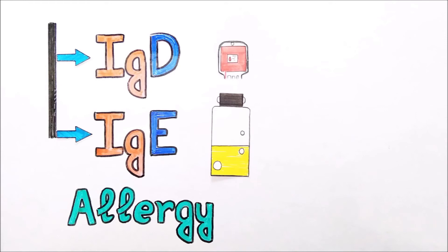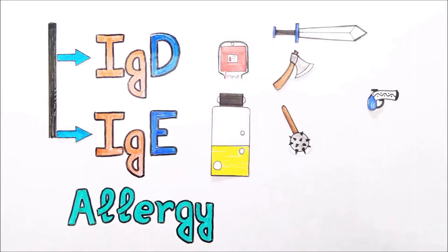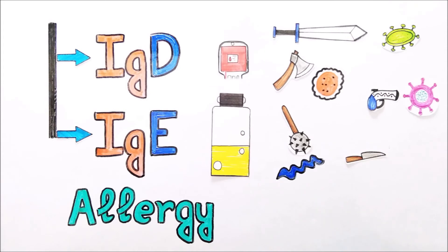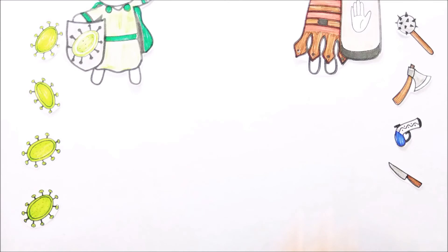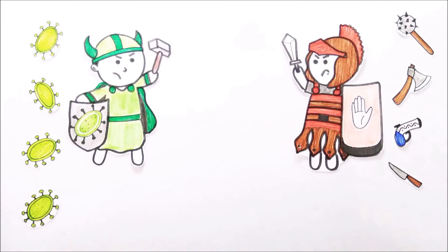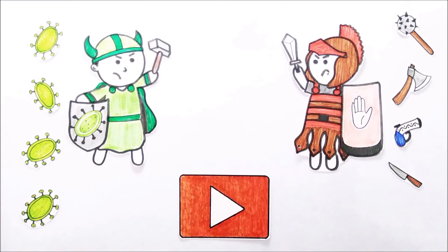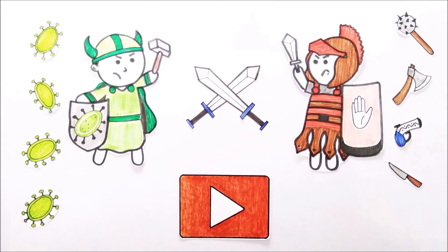Each type of antibody is specialized in performing certain types of attacks, and their primary task is to attack only one kind of antigen. So how do these antibodies fight antigens, and how does your body protect itself? We will know about this epic battle in detail in some other video.